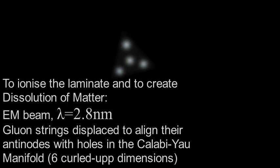So what we do is we beam electromagnetic radiation at the laminate at 2.8 nanometers wavelength. What that does is it ionizes the composite material. So you get your electrons floating around outside the atoms and obviously ionizes the whole material.